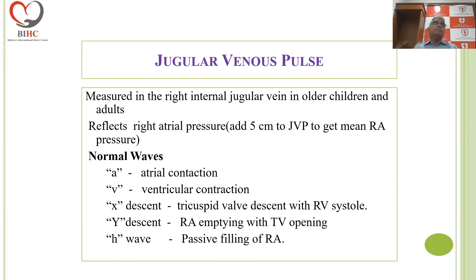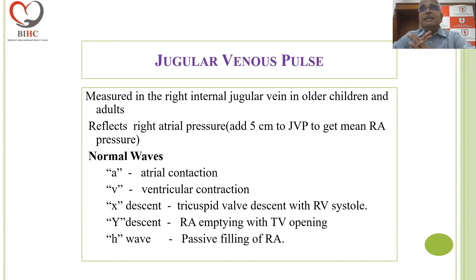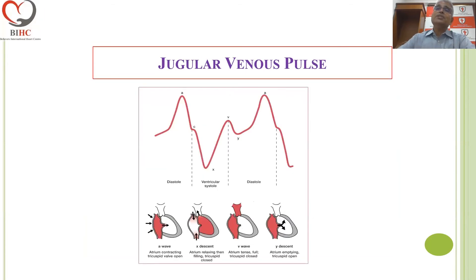After pulse and blood pressure, you move to the jugular venous pulse. The JVP is measured in the right internal jugular vein in older children. In an infant, you don't bother to look at the JVP because there is hardly any visible neck; palpating the liver will give you the same information as looking at the JVP. The normal waves in the JVP — look at this cartoon and see each stage carefully.